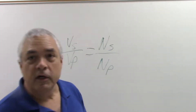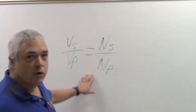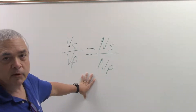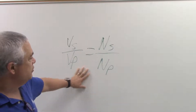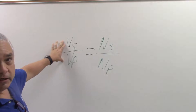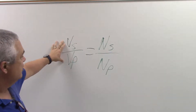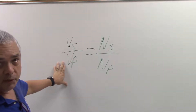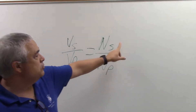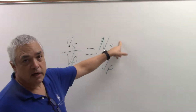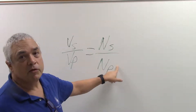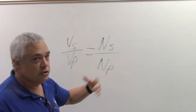When you're looking at that transformer, whether it's a step-up transformer or a step-down transformer, you're going to be using the same law: voltage on the secondary side of the transformer divided by the voltage on the primary side of the transformer is equal to the number of turns on the secondary side divided by the number of turns on the primary side.